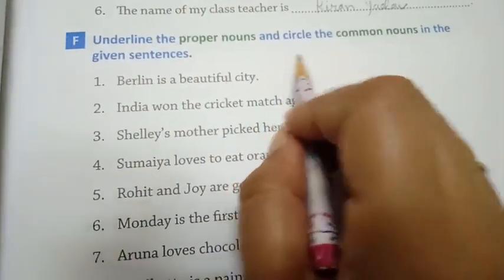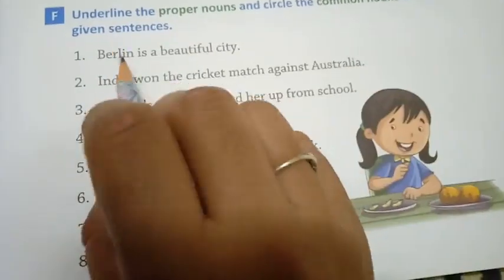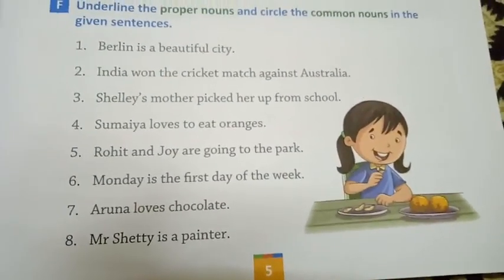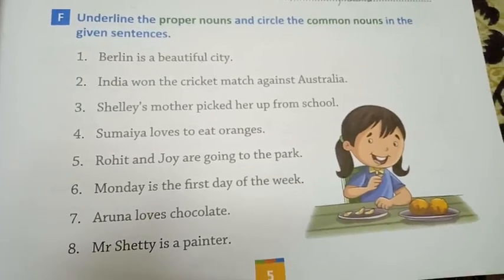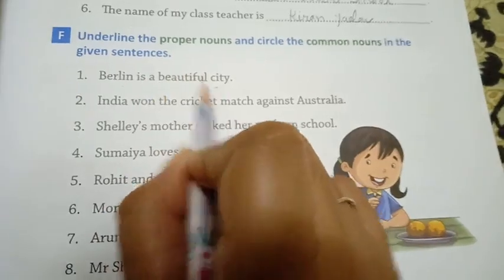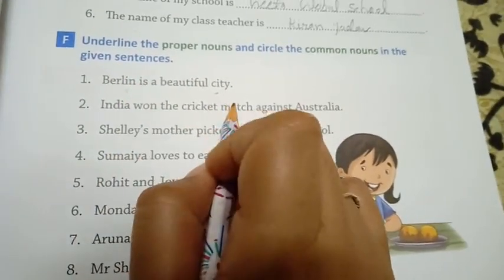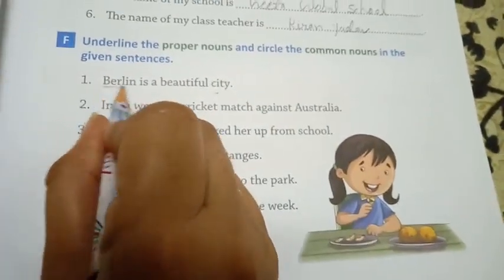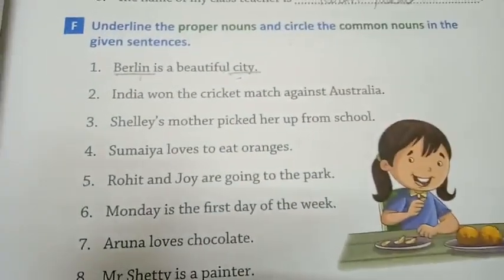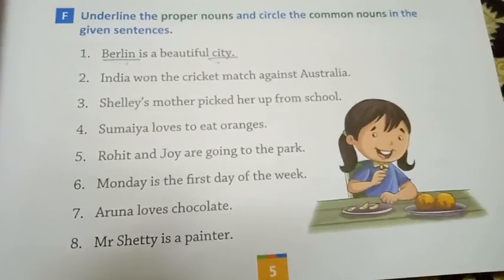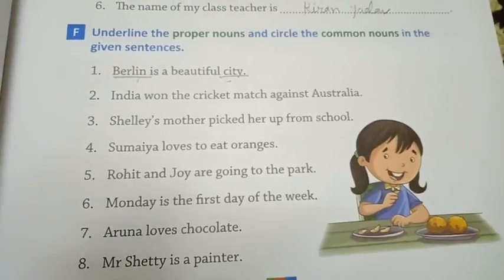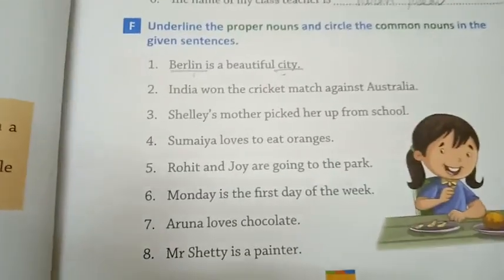Now underline the proper nouns and circle the common nouns in the given sentences. Please write this in your notebook and solve it. For example: 'Berlin is a beautiful city' — Berlin is a name of a city, so Berlin is a proper noun and 'city' is a common noun. Like this, you will solve this exercise. Thank you, have a good day — please learn it and practice it.